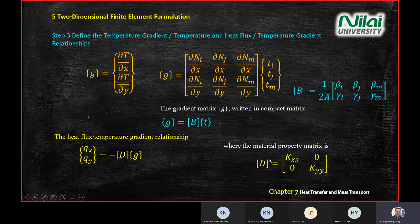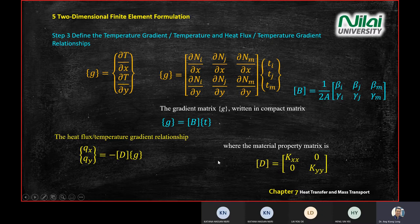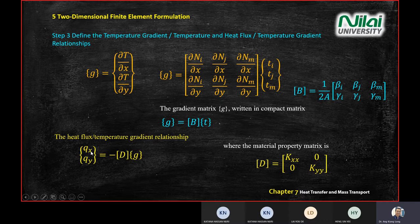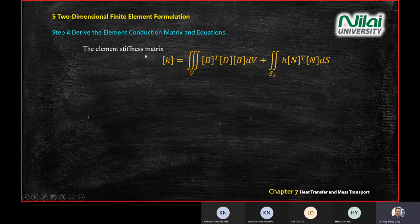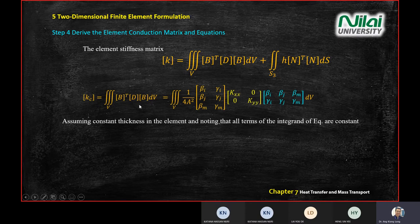Then find the heat flux: q = −D·G, which can be written as q = −D·B·t. D is the material conductivity matrix with kxx and kyy on the diagonal — these values are given in the problem. You get two components: qx in the x-direction and qy in the y-direction, because we're now working in two dimensions.